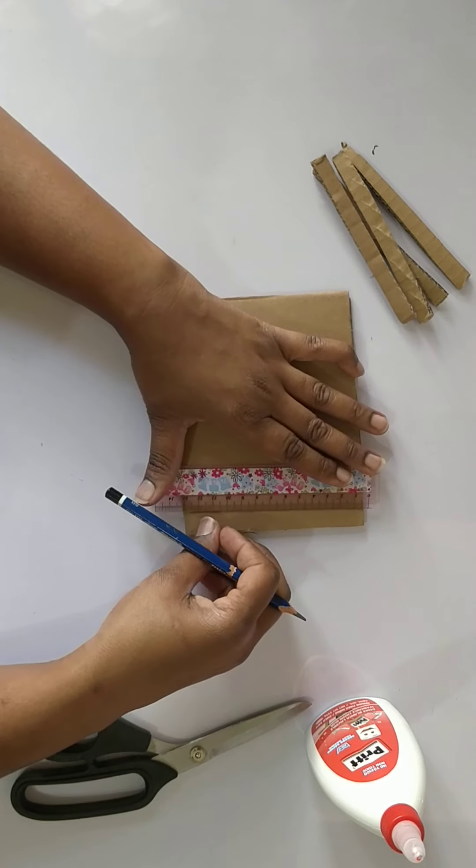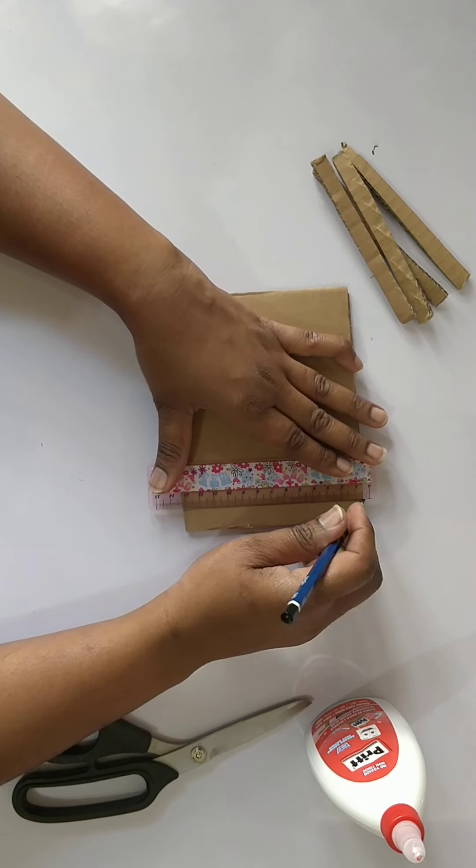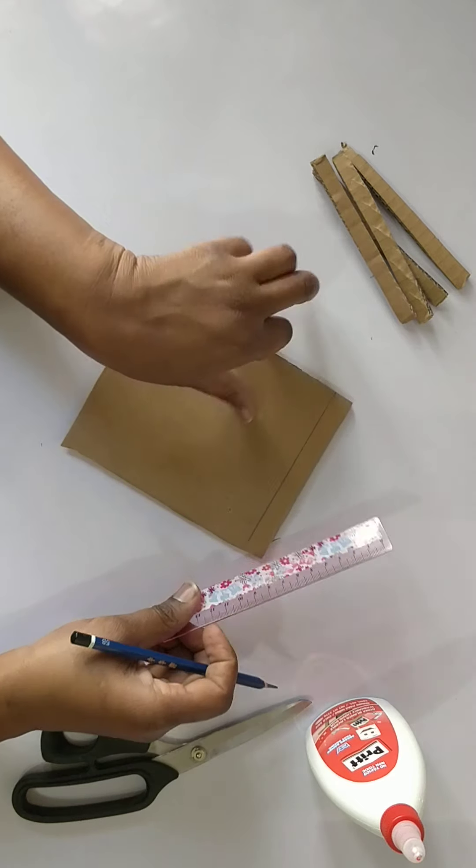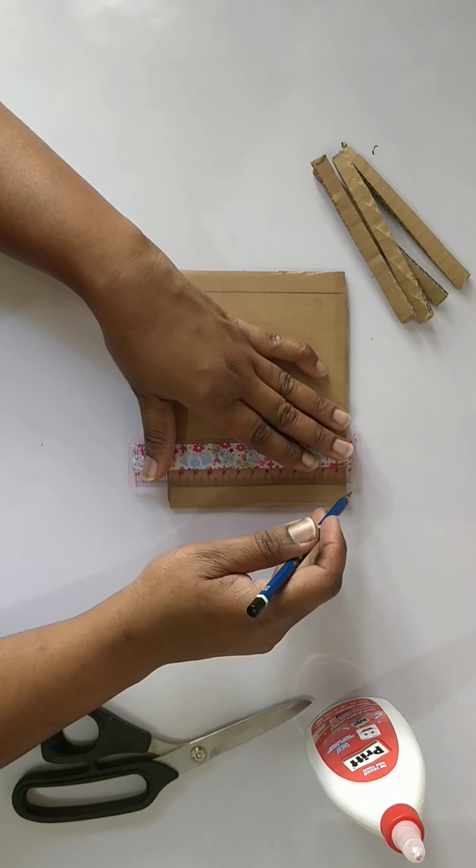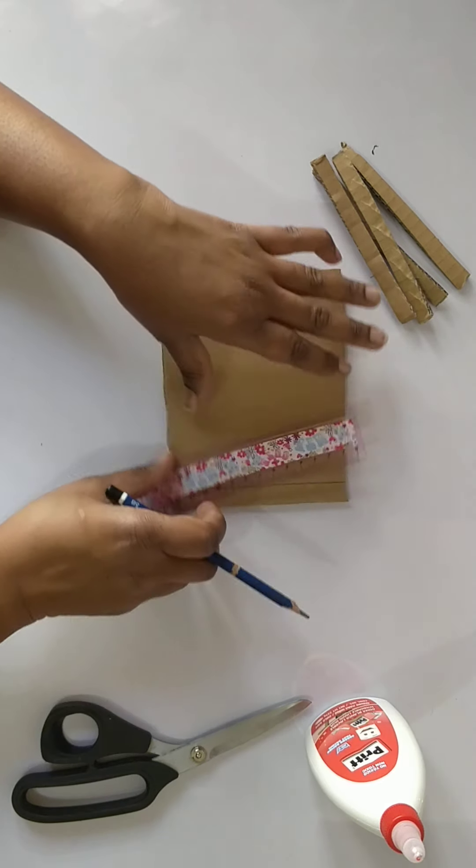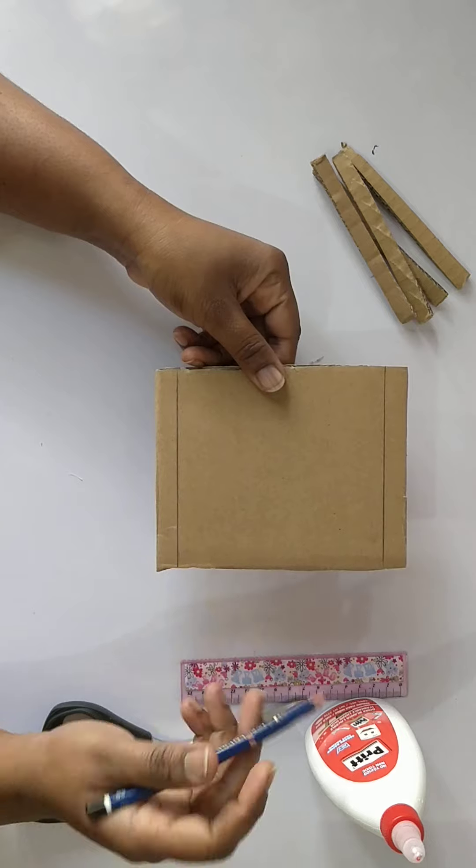I'm going to measure about half an inch away from the edge on both sides, one at the top and one at the bottom.